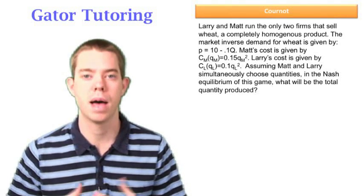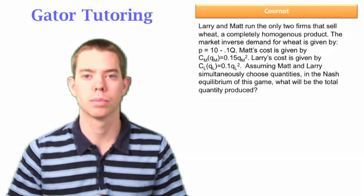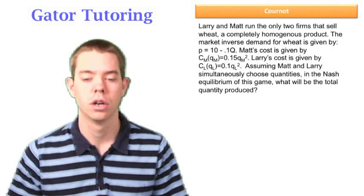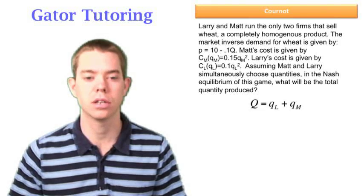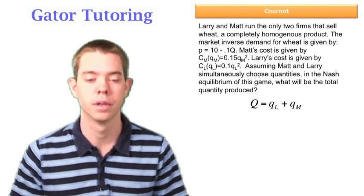And then it says, assuming that Matt and Larry simultaneously choose quantities in the Nash equilibrium of this game, what will be the total quantity produced? So it's asking us again about big Q, which we define as QL plus QM.